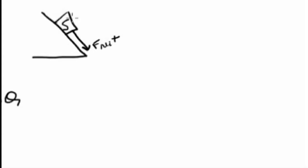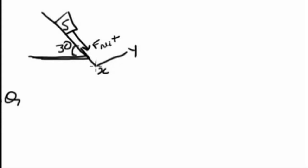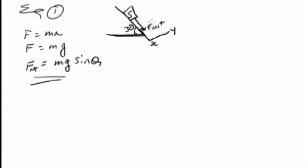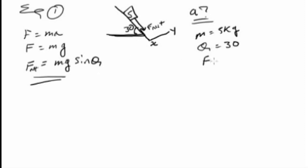What is the net force? Mass is 5 kilograms. The angle is 30 degrees along the surface. Along the X-axis, the surface component — the net force along X. So the net force formula: if the magnitude is equal to mg sin θ, where mass is equal to 5 kilogram and θ is equal to 30 degrees.